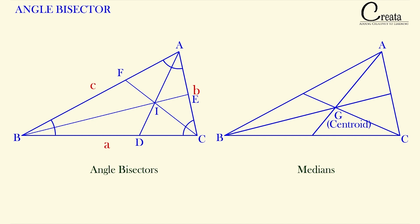We have studied that the centroid divides the median in the ratio of 2:1. Similarly, for the angle bisector, the point of intersection of the three angle bisectors is the incenter, that is the point I.